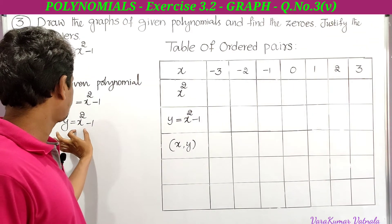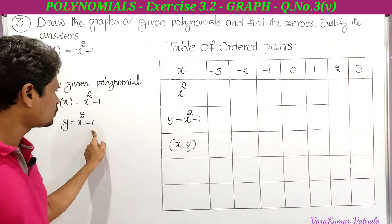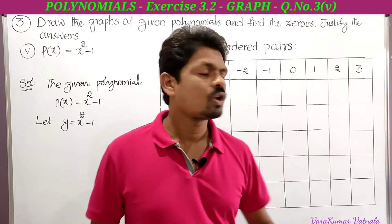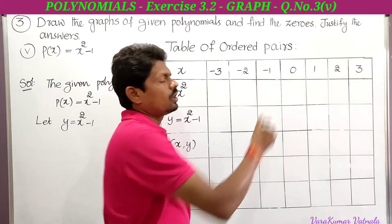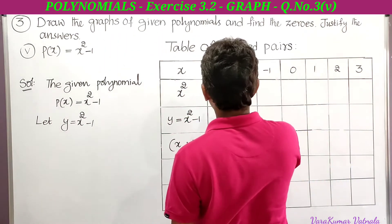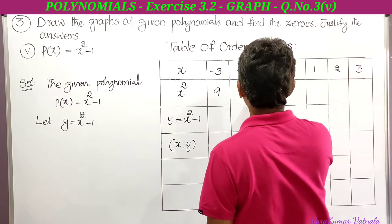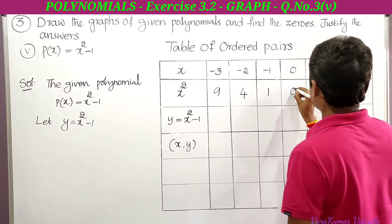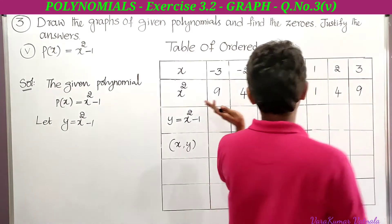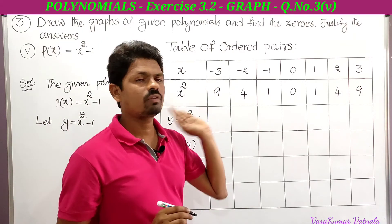To find the y values, we first need x². So the next row is x² − 1, which gives y = x² − 1. By squaring all the x values we get: (−3)² = 9, (−2)² = 4, (−1)² = 1, 0² = 0, 1² = 1, 2² = 4, 3² = 9. These are the x² values.